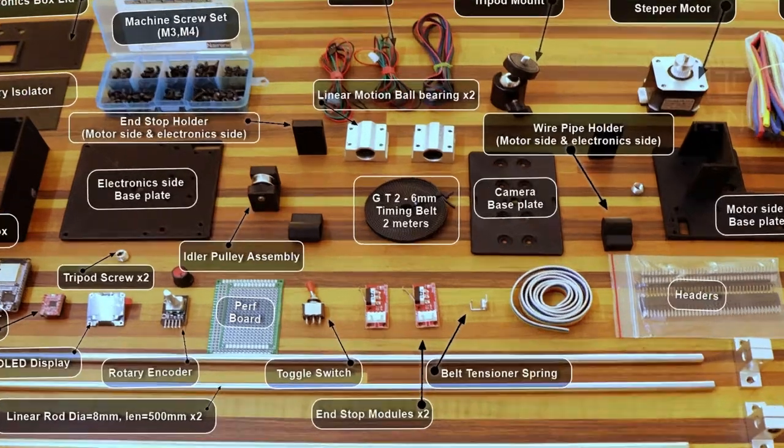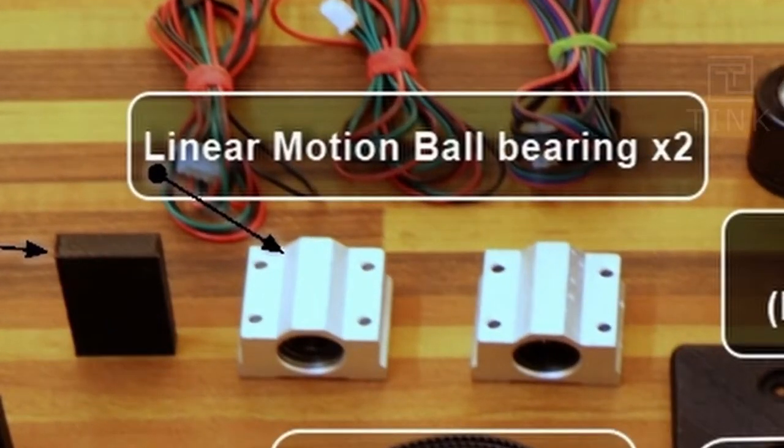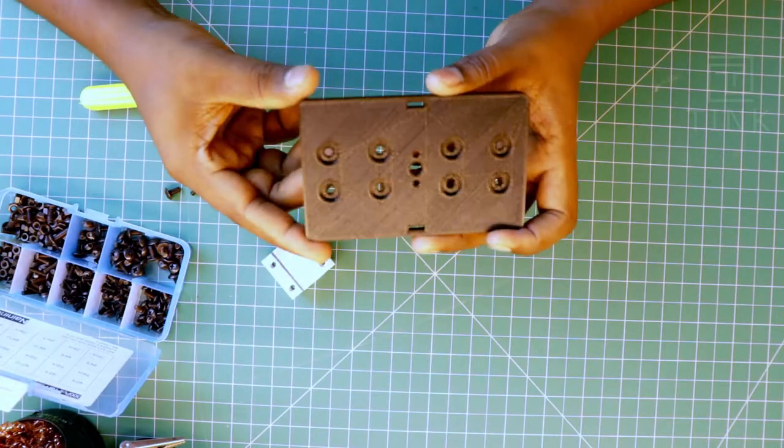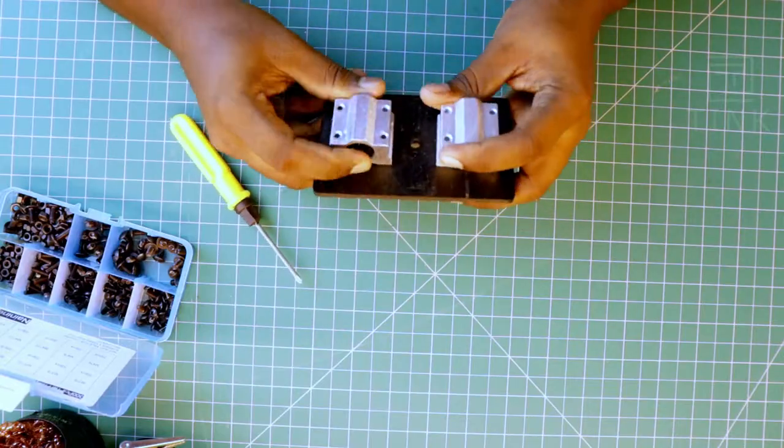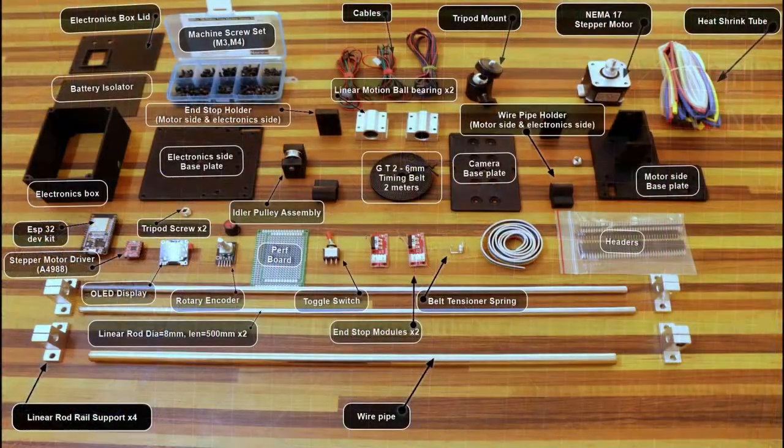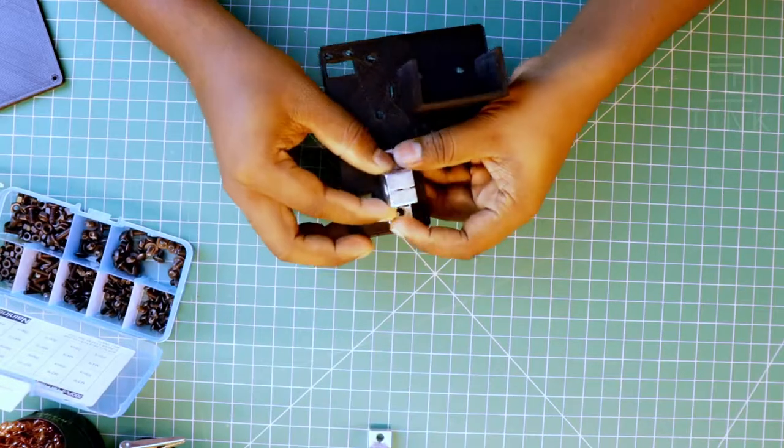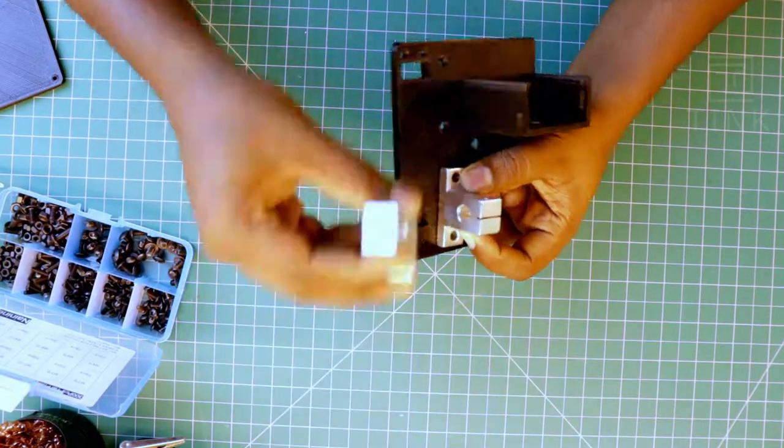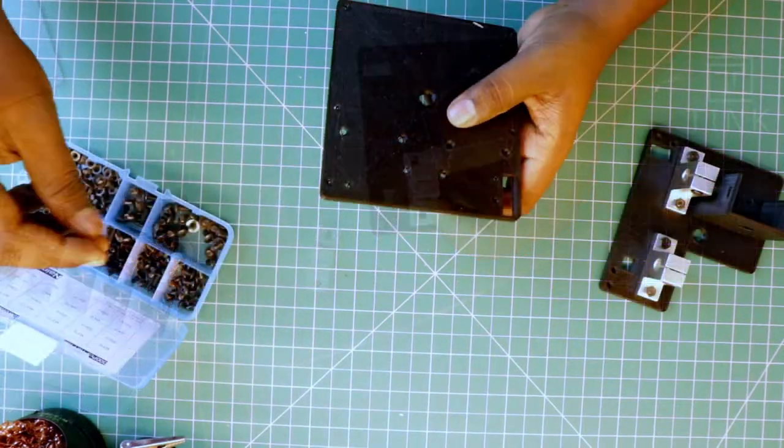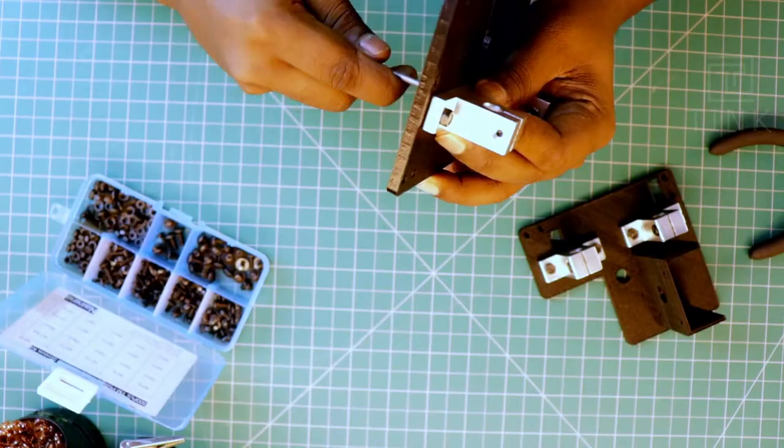Okay, we can now attach the linear bearings to the base plate. Next, we have to connect the rail support for the linear rods to the ends of the shaft. Let's start with the side of the motor, then similarly fix it at the electronics end.